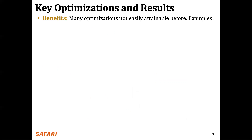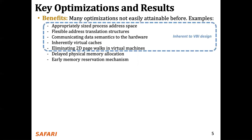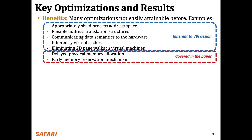VBI naturally enables a variety of important optimizations which are not easily attainable in the conventional virtual memory framework. We discussed seven examples of such optimizations in our paper, five of which are inherent to the VBI design. Please refer to our paper to read about these five benefits and two other examples of optimizations that VBI enables.